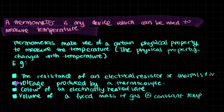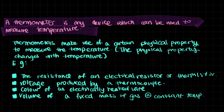We have other examples, such as the resistance of an electrical resistor or a thermistor. Metals gain higher resistance at higher temperatures, and you can measure this using ammeters and voltmeters — getting the current and voltage to calculate resistance — to predict what temperature the wires are at. There's also the voltage produced by a thermocouple, which we'll talk about later, and the color of an electrically heated wire. Some wires have different colors as you heat them to higher temperatures, and you can use that as an indicator of temperature.